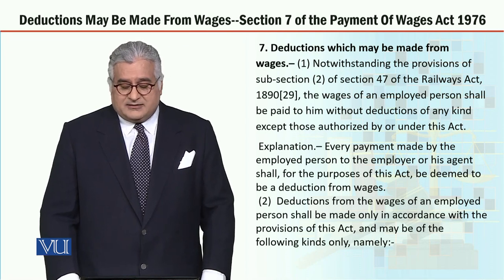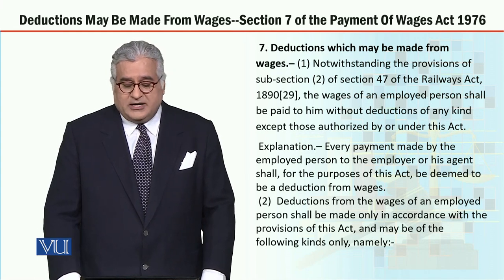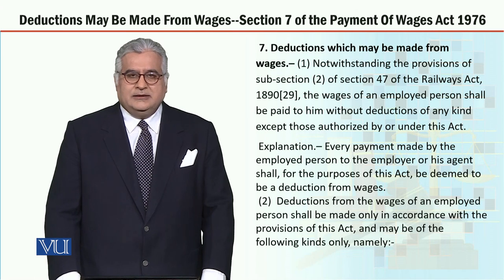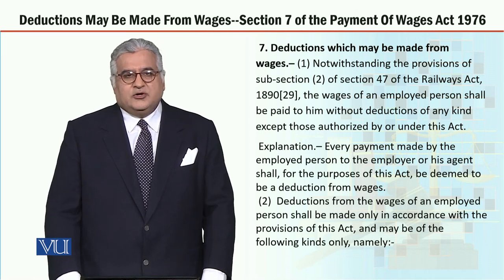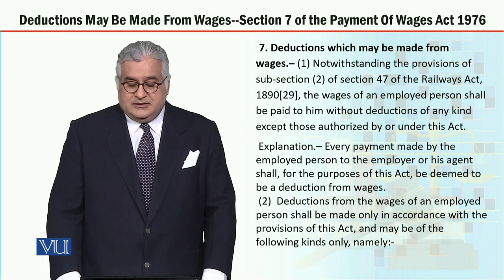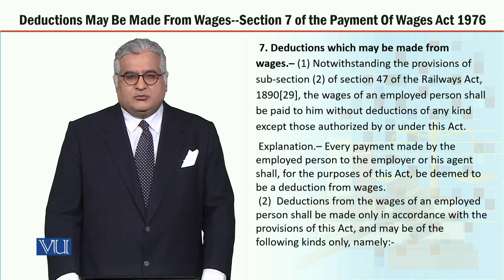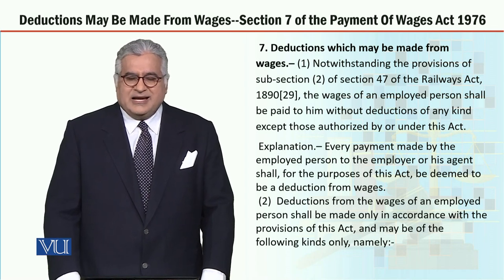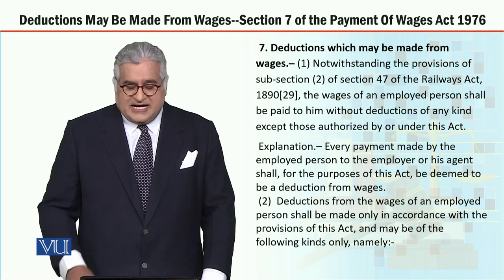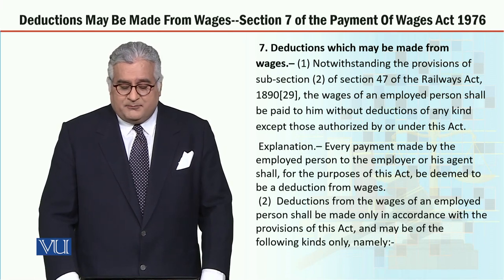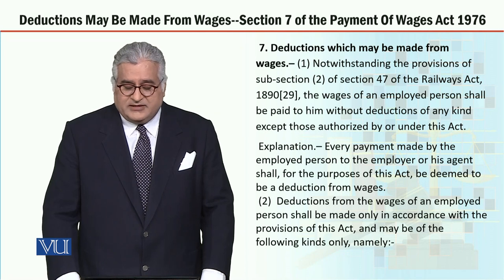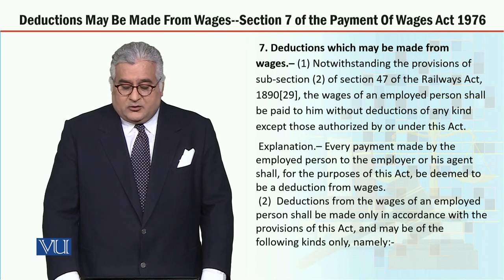Just a note about the Railways Act 1890 — section 47, subsection 2 — its value is rendered zero here, and the deductions will be governed by the Payment of Wages Act. Every payment made by the employed person to the employer or his agent shall, for the purposes of this act, be deemed to be a deduction from wages.